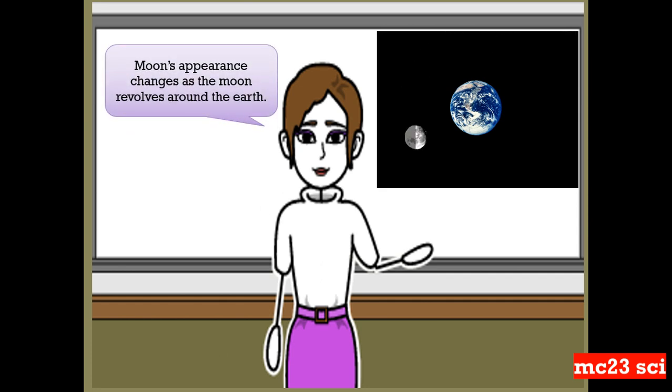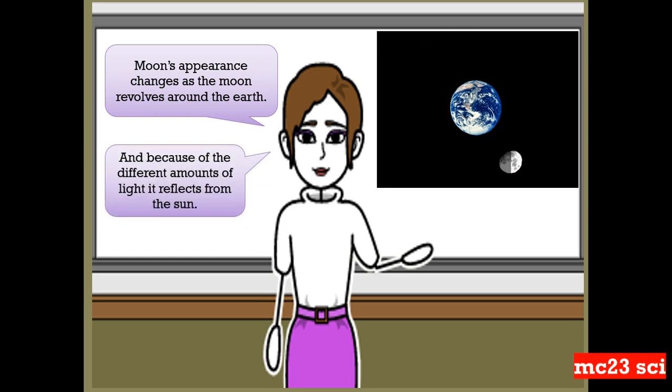The moon's appearance changes as the moon revolves around the Earth, and because of the different amounts of light it reflects from the sun.